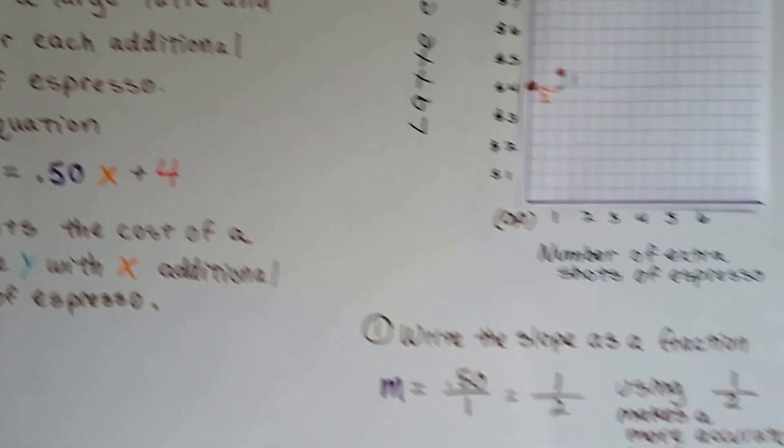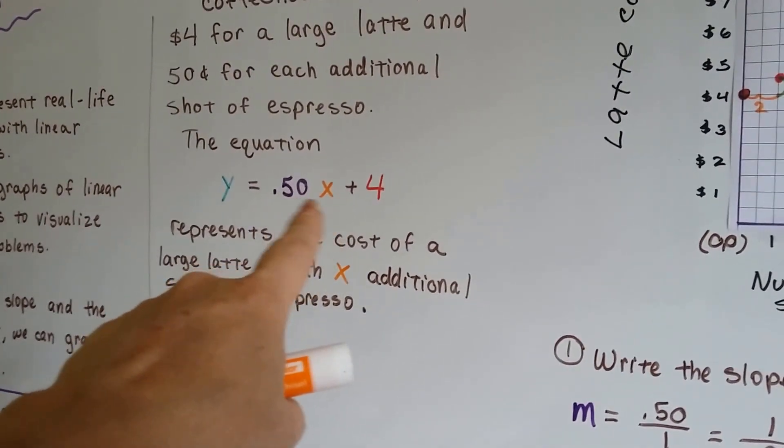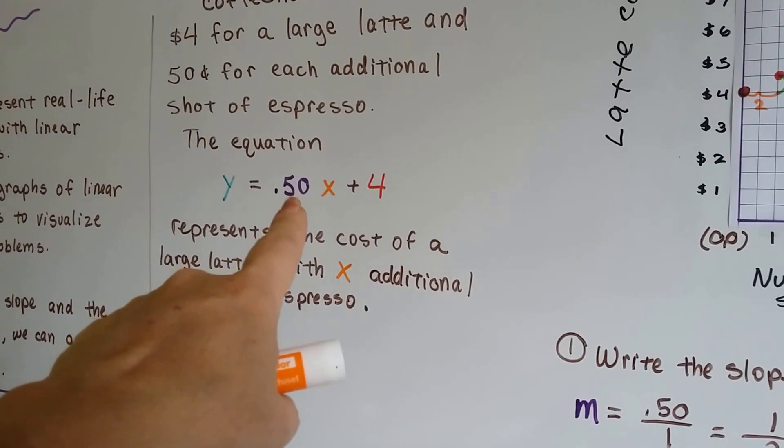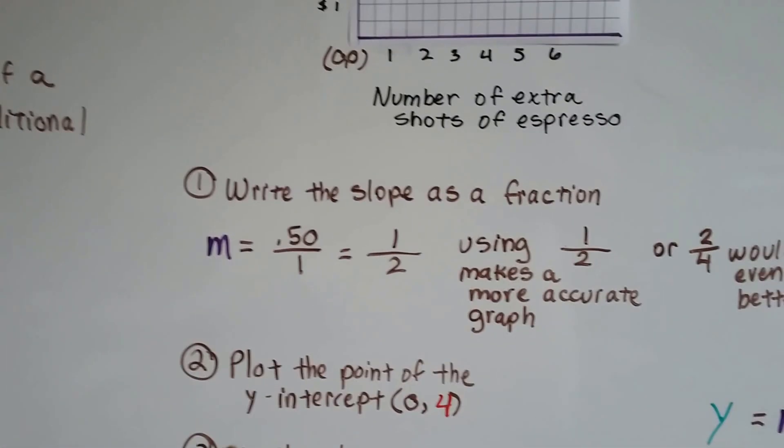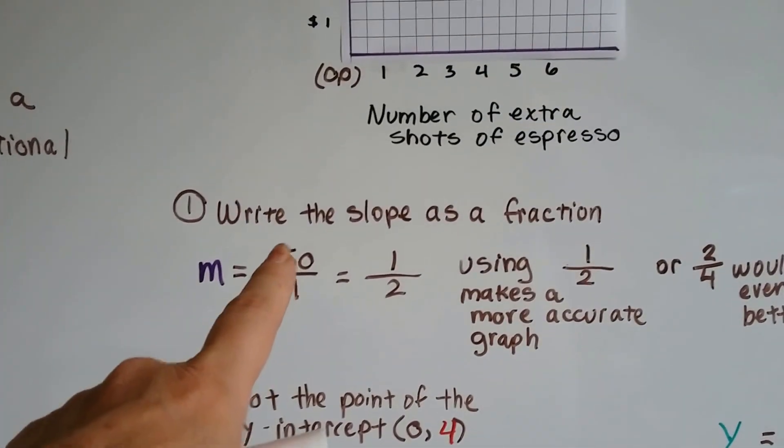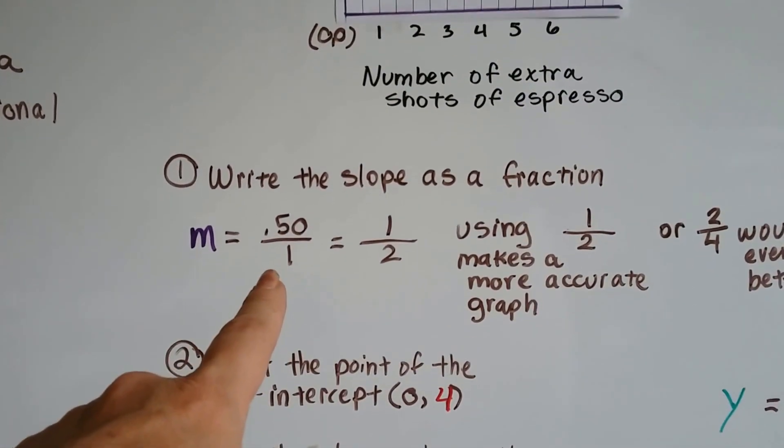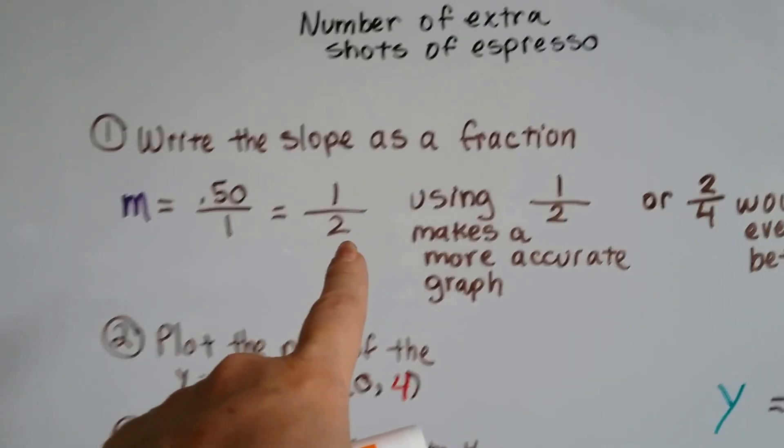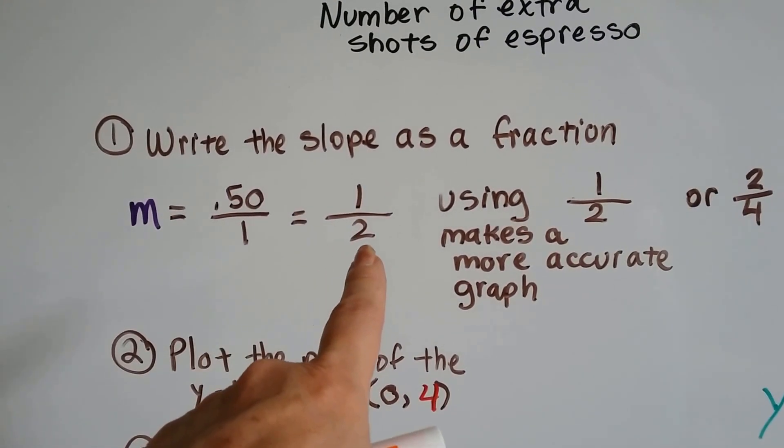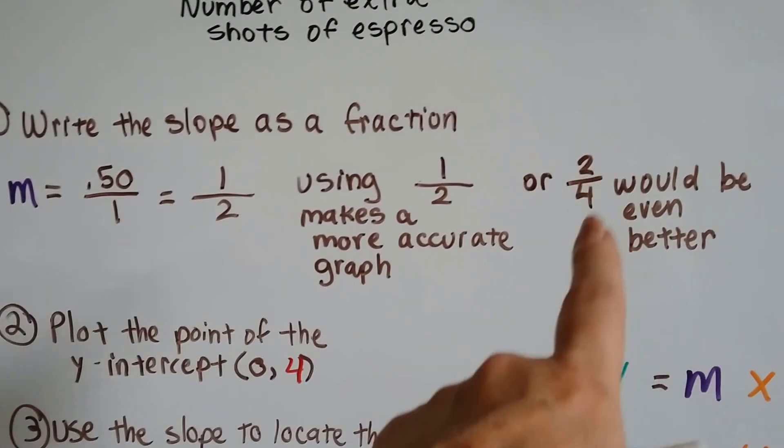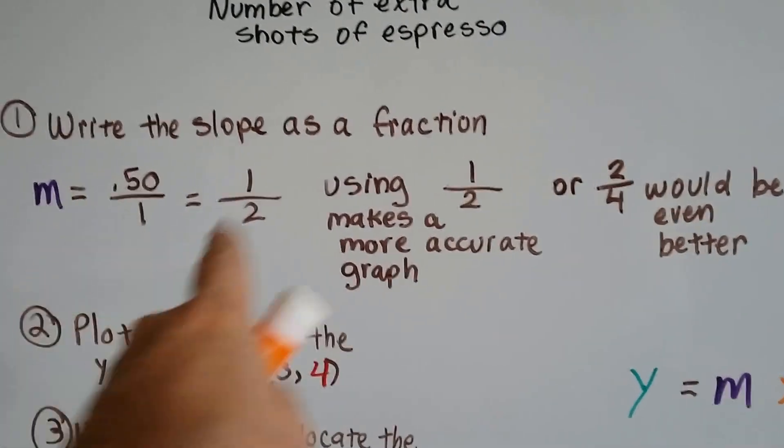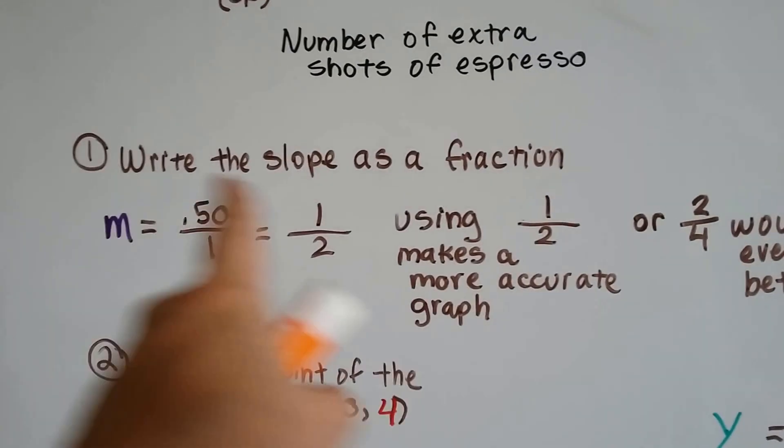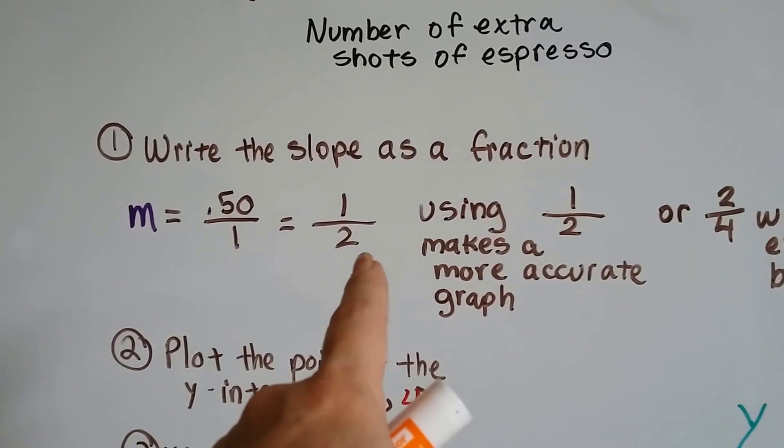We can write the slope as a fraction. It's 50 cents for each shot, so 50 cents over 1. Because this is difficult to graph, we change it to an equivalent fraction of 1 over 2, or $1 over 2 shots. If we did $2 over 4 shots, it would be even easier to graph. The larger the numbers we use and get away from that decimal, the easier it's going to be for us.